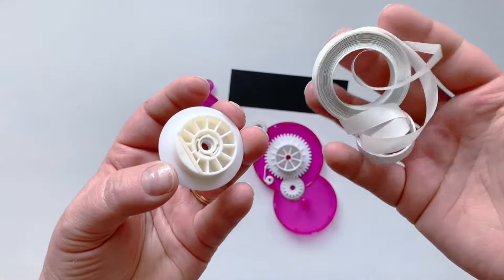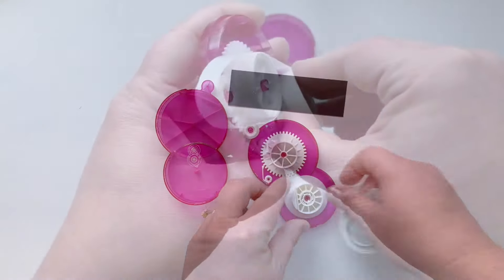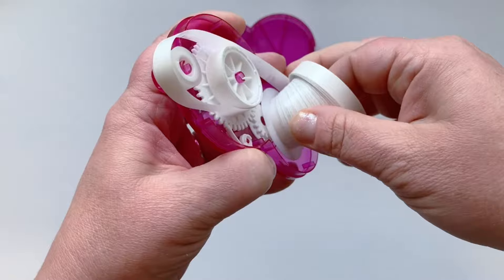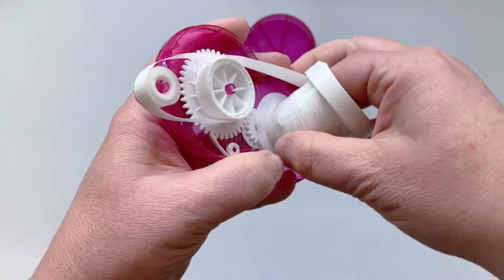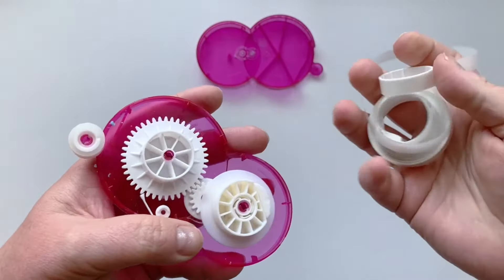Once you have that removed, go ahead and discard this excess. Or you can also start by removing the tape from the back gear first. Just remove it very slowly, kind of unraveling it as you go. And then again, just discard it.